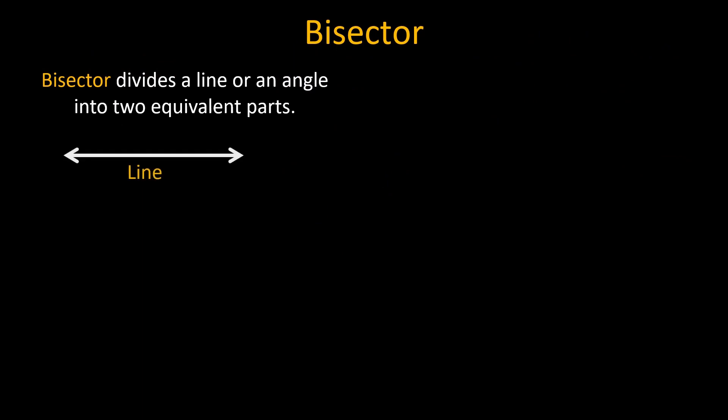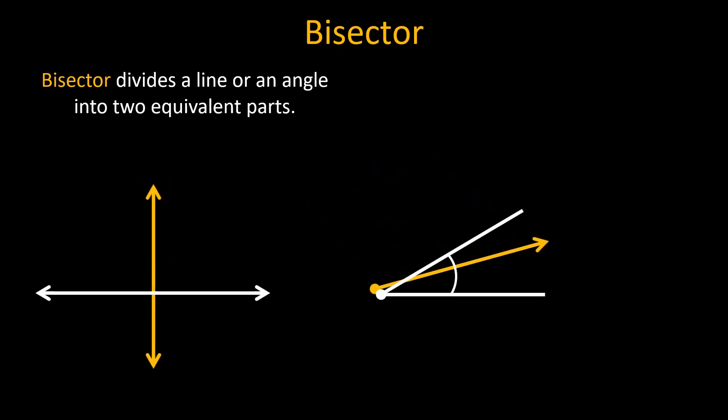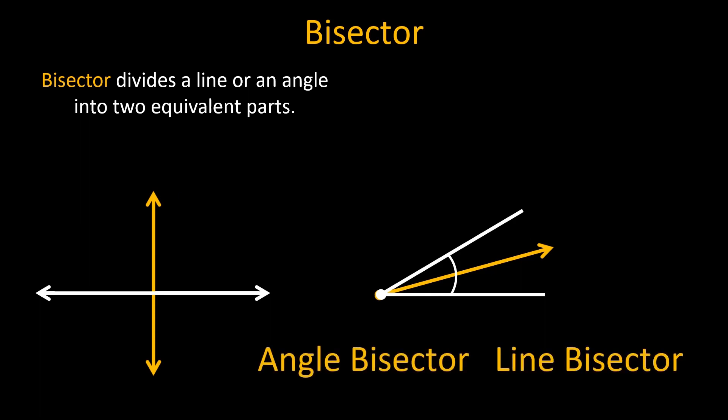The bisector is a line, ray, or segment that divides a line or an angle into two equivalent parts. Based on what geometrical shape it bisects, bisectors have two types: angle bisector and line bisector. In this video we will study the angle bisector.